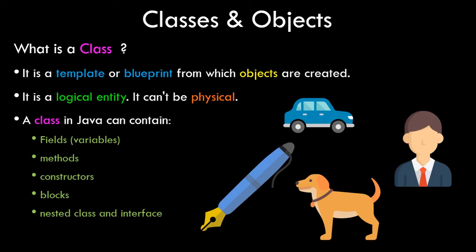In the previous video we took an introduction to object-oriented programming and saw some features. We saw procedure-oriented programming versus object-oriented programming and also took a scenario for better understanding the OOP concepts. If you missed that video you can check it out in the playlist — this video is the continuation where we discuss more on classes and objects.